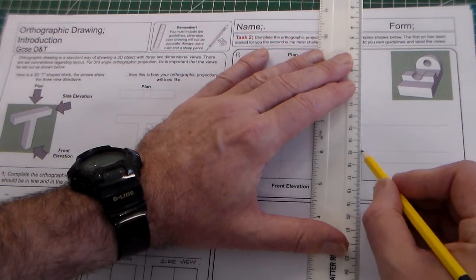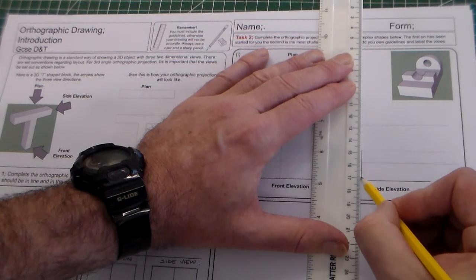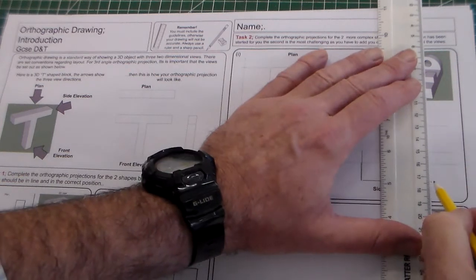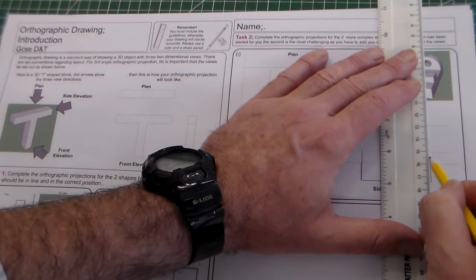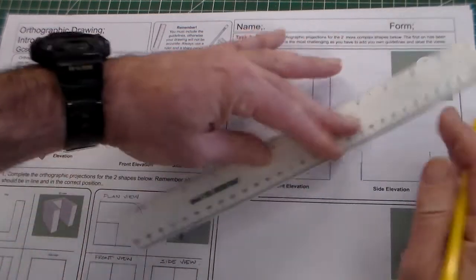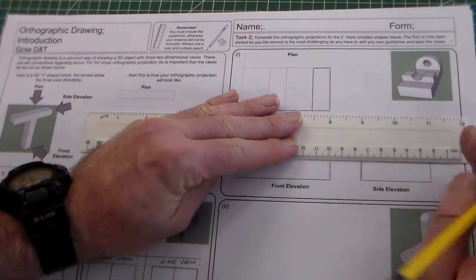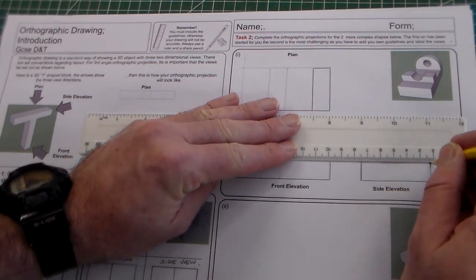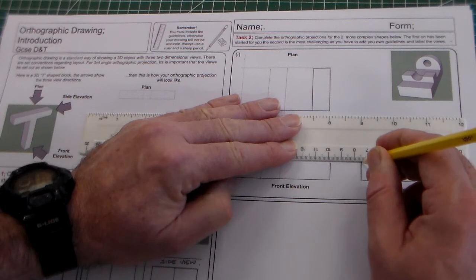This now gives us a detail for here which I can start to line in here. And this detail here.